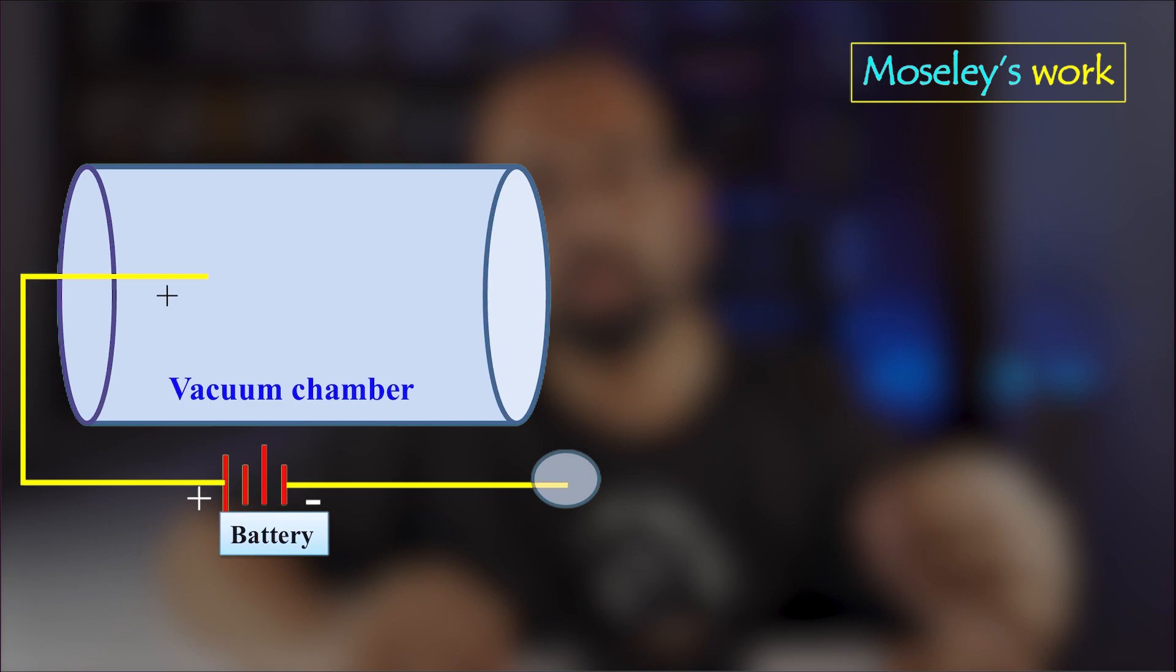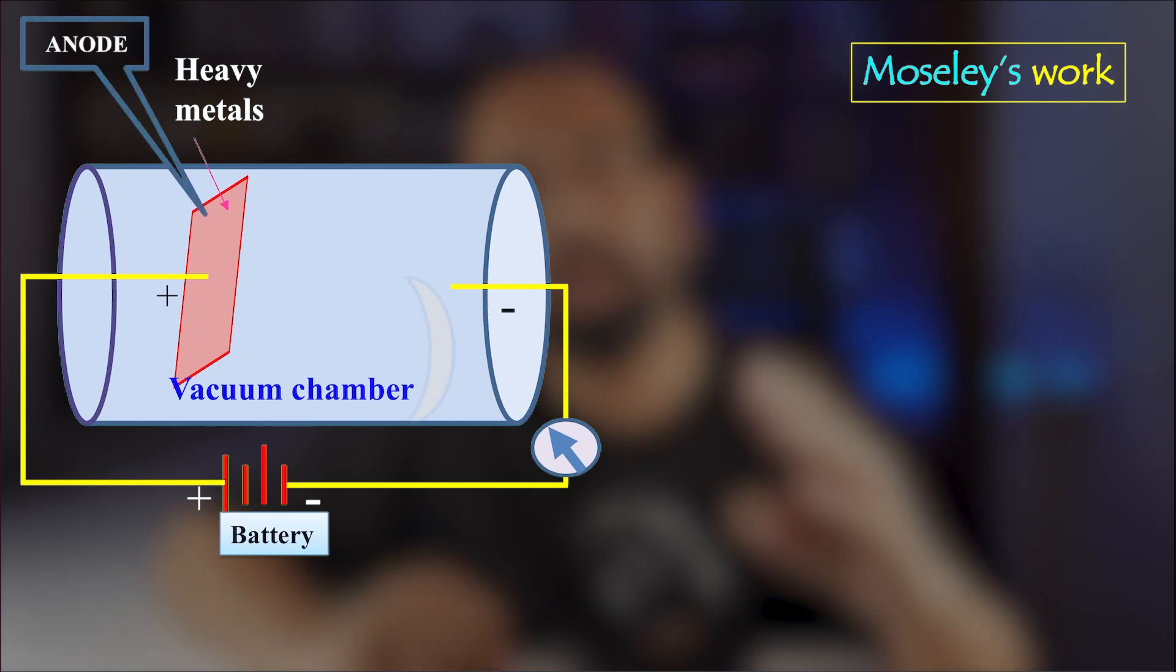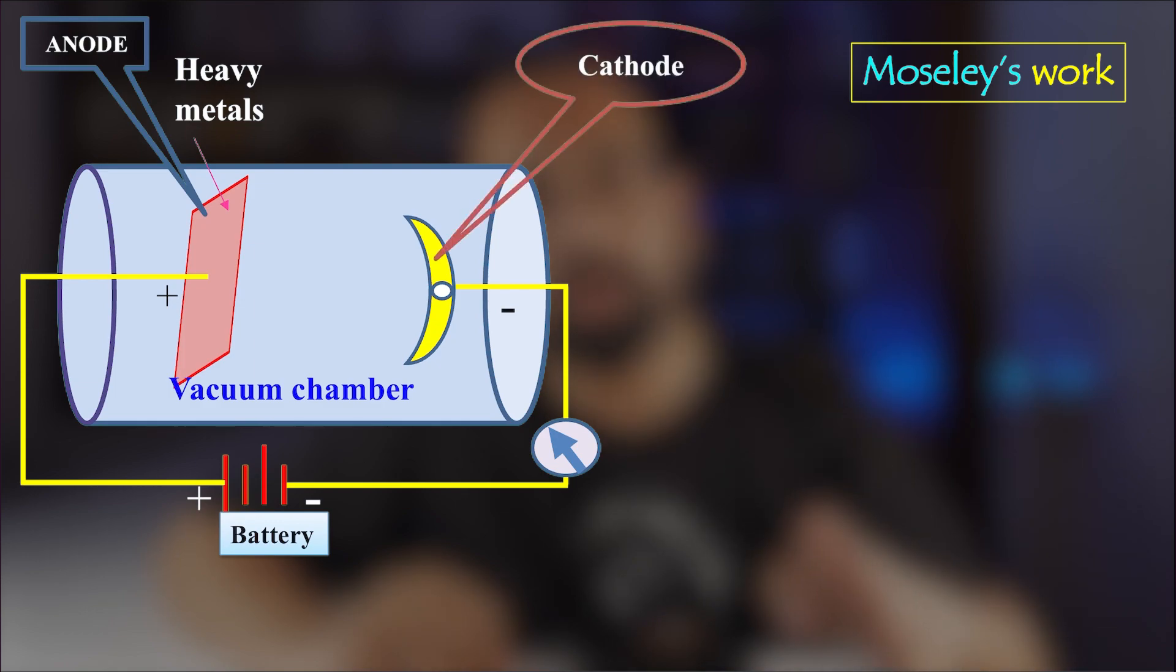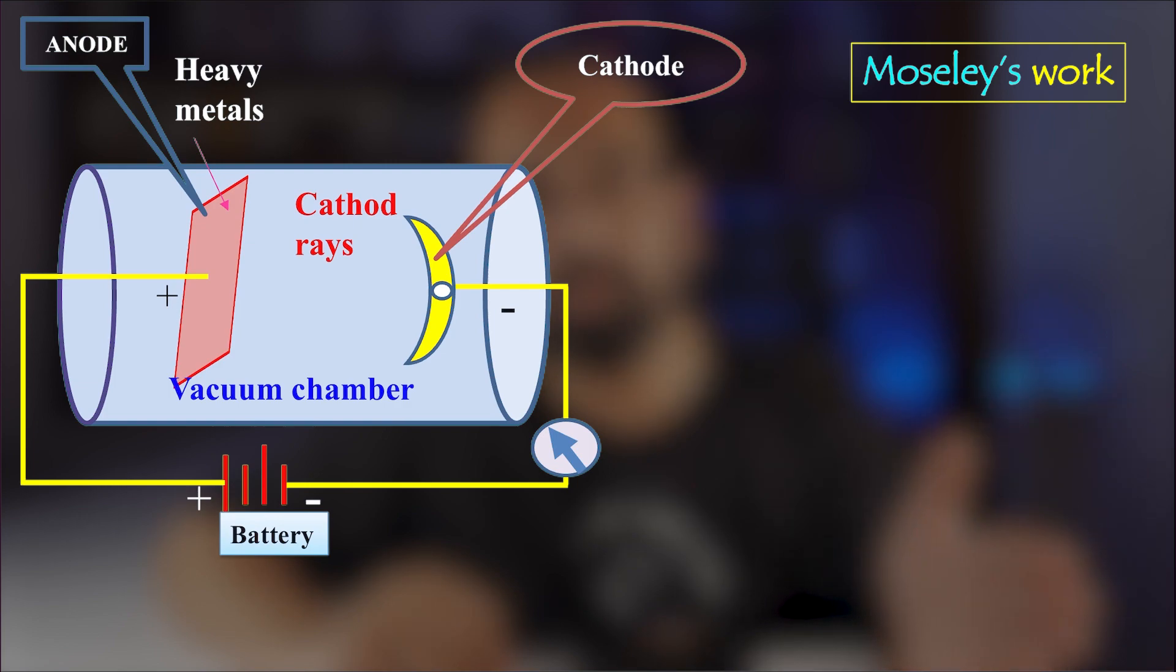This is an X-ray tube. There is a negative electrode connected to the negative end of the battery, which is the cathode, and there is a positive electrode connected to the positive end of the battery, which is the anode. There is also a concave surface that will converge all the cathode rays to a single point on the target material.